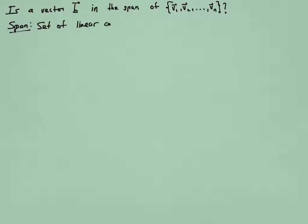So the first thing to remember is, what does span mean? The span of a set of vectors is the set of all their linear combinations. So this question really becomes, is B a linear combination of the vectors V1 through Vm?